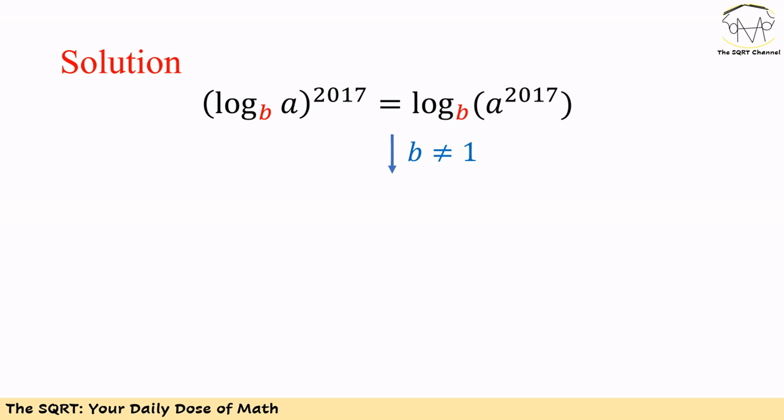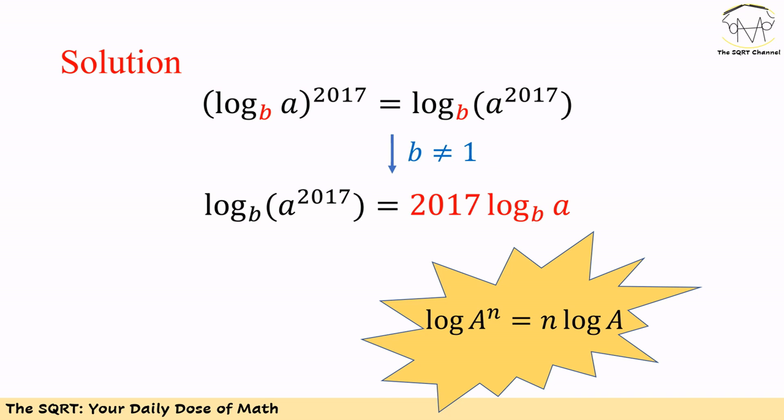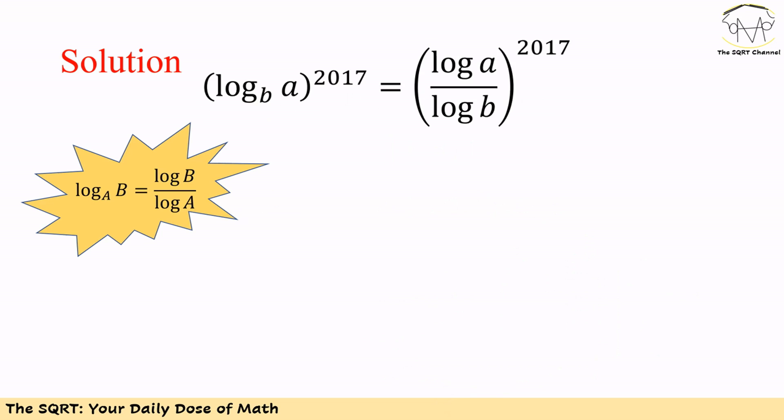To solve this problem we need to know some interesting properties of logarithmic functions. We start with log of A in base B to the power of 2017, which should equal log of A to the power of 2017 in base B. Since B is the base of the logarithm, B cannot be 1. We also know that log of A to the power of N equals N times log of A. Using this property, log of A to the power of 2017 in base B equals 2017 times log of A in base B.